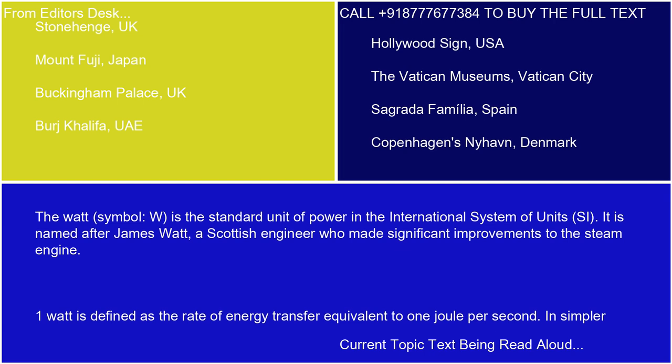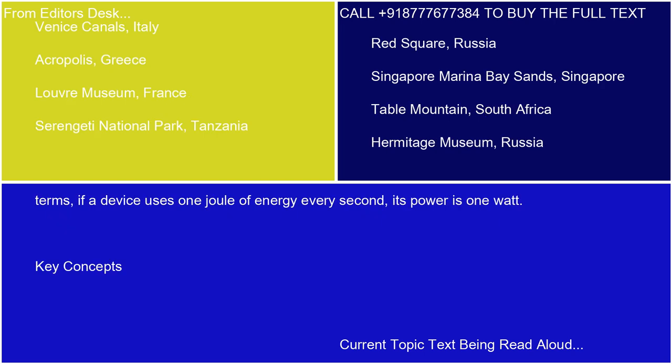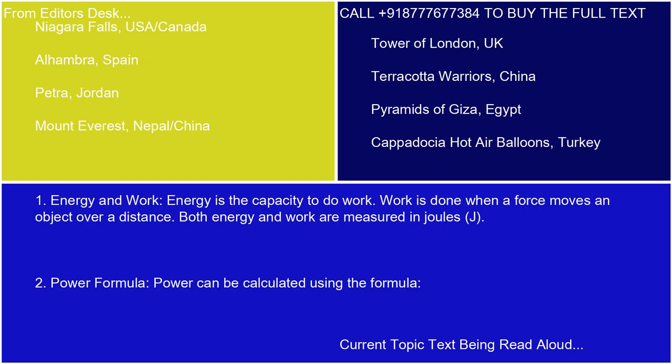One watt is defined as the rate of energy transfer equivalent to one joule per second. In simpler terms, if a device uses one joule of energy every second, its power is one watt. Energy is the capacity to do work. Work is done when a force moves an object over a distance. Both energy and work are measured in joules, J.